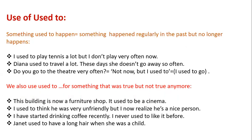We also use 'used to' for something that was true but is not true anymore. For example: 'This building is now a furniture shop, but it used to be a cinema.' He was very unfriendly, but now I realize he's a nice person. 'I have started drinking coffee recently — I never used to like it before.' 'Janet used to have long hair when she was a child.'